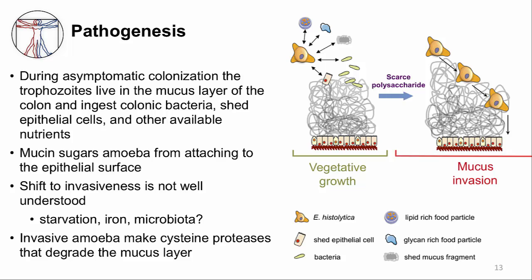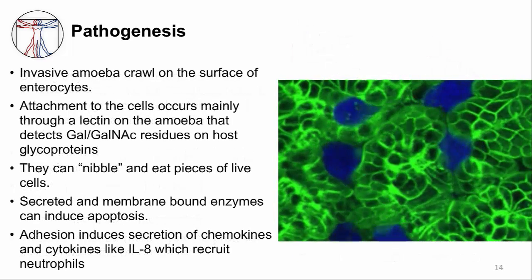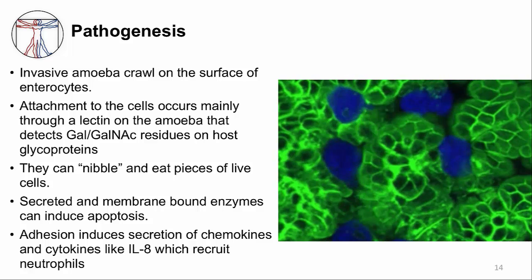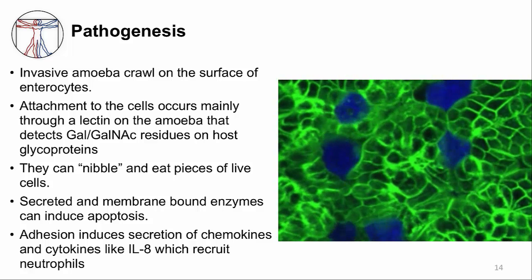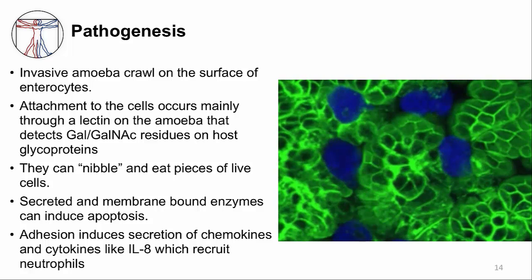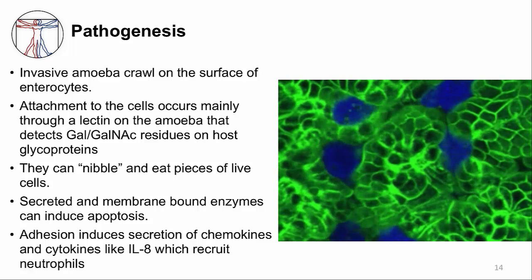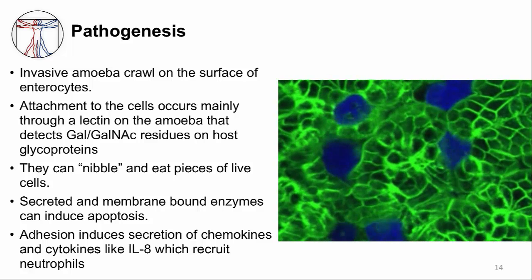When the amoeba become invasive, they start to produce proteases that degrade the mucus layer, bringing them into closer contact with the epithelial surface. The amoeba then crawl on the surface of the enterocyte and attach mainly via a lectin on the amoeba that binds to sugar residues on host glycoproteins. Even before invading, amoeba can nibble pieces of live cells without killing them. In the movie, the amoeba labeled in blue were added to a mouse colon labeled in green; you can see the amoeba crawling between the crypts and nibbling pieces of cell, which appear as green fragments inside the amoeba. As amoeba become more invasive, they secrete enzymes that cause epithelial cells to die. This adhesion and destruction leads to cytokine and chemokine secretion, like IL-8, which recruits neutrophils to the site, triggering inflammation.